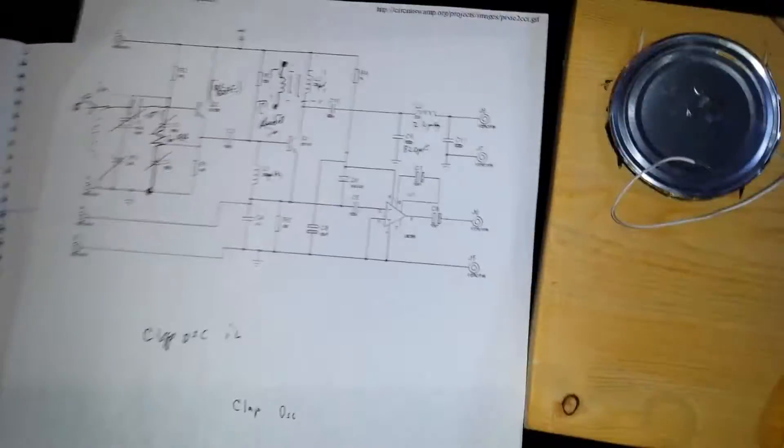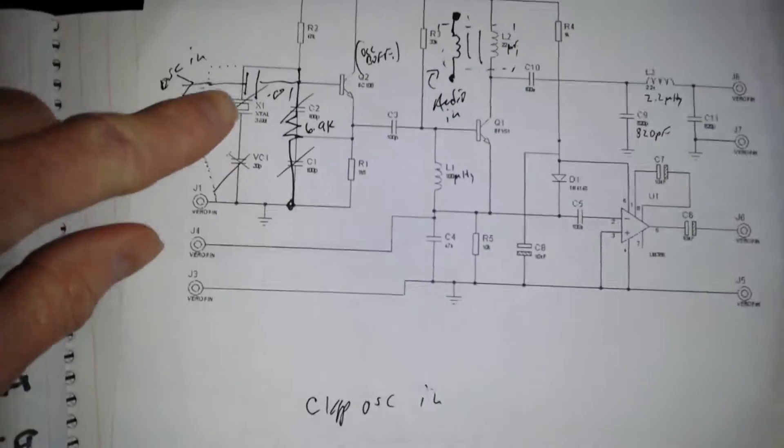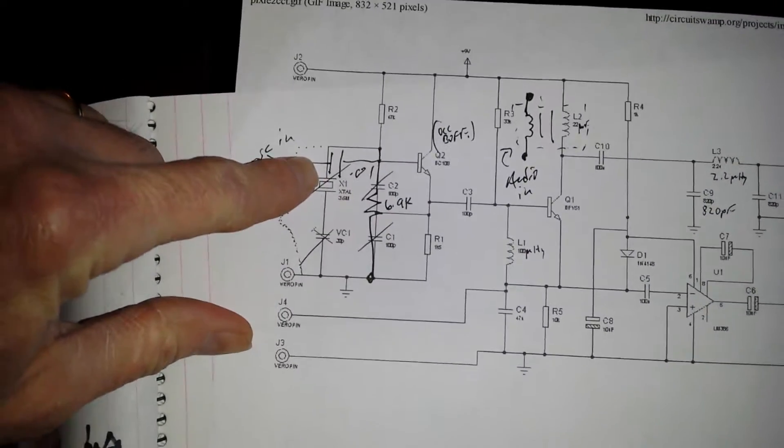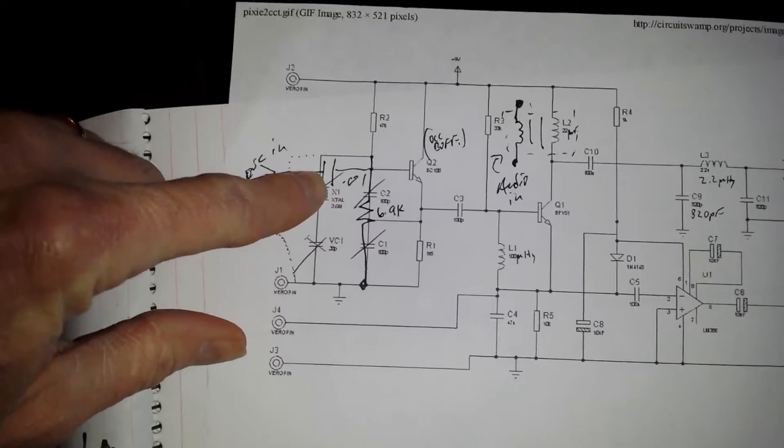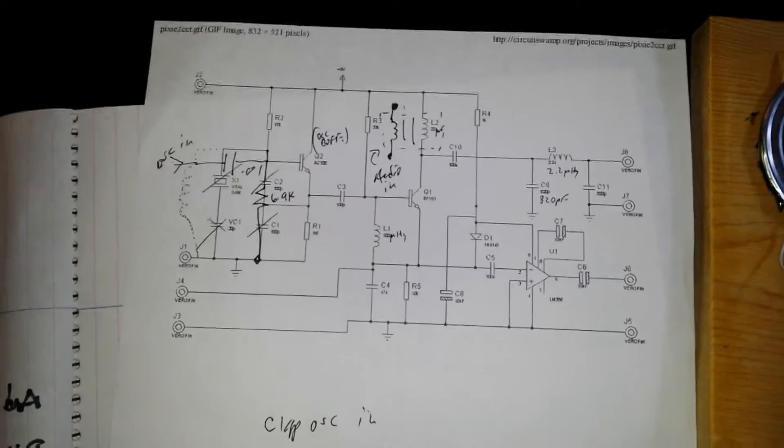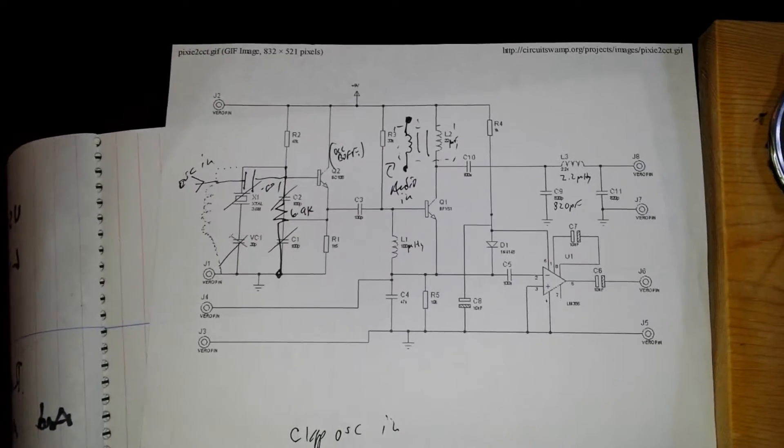Insert the signal right here through the capacitor, or send it directly into the base. Then you can have variable frequency operation on your direct conversion receivers.